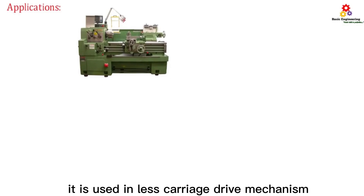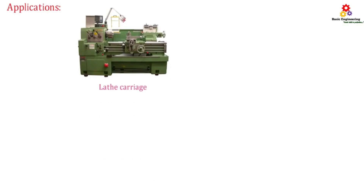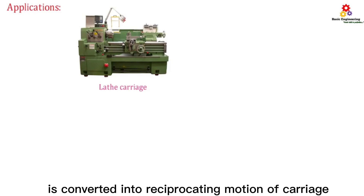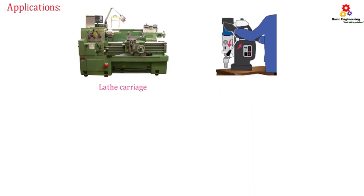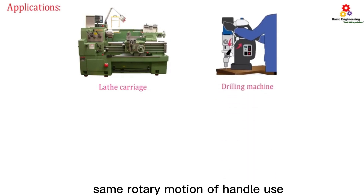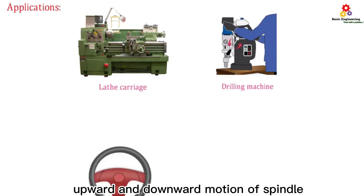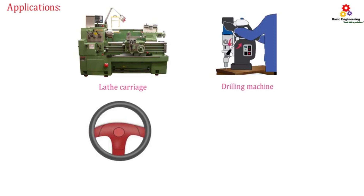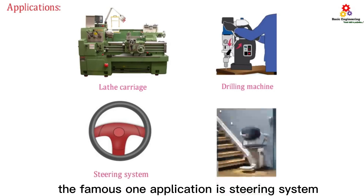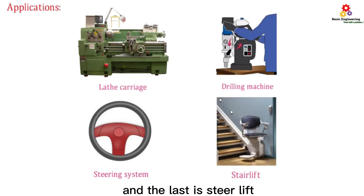Applications of rack and pinion: It is used in lathe carriage drive mechanism, where the rotary motion of the handle is converted into reciprocating motion of the carriage. It is used in drilling machine spindle movement, where rotary motion of the handle gives upward and downward motion of the spindle. The most famous application is the steering system, and it is also used in stair lifts.